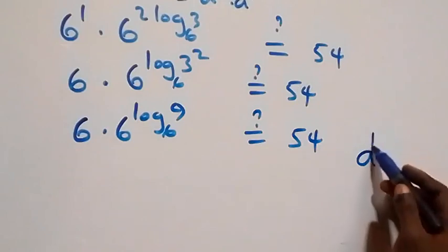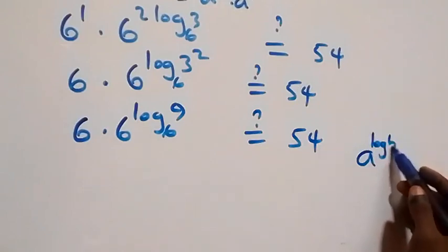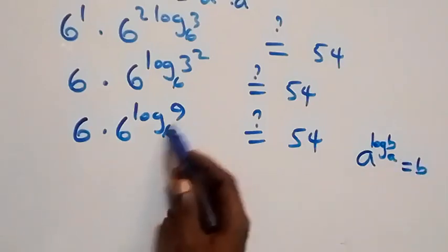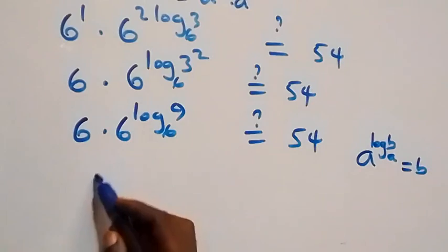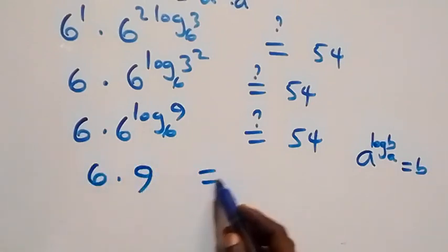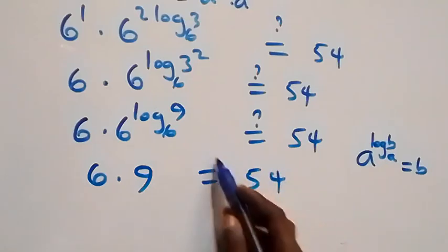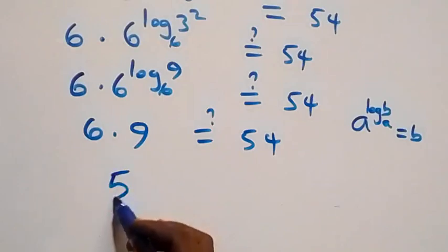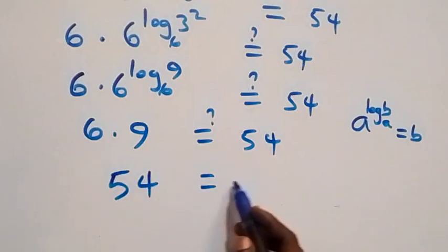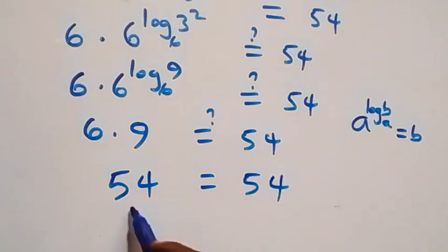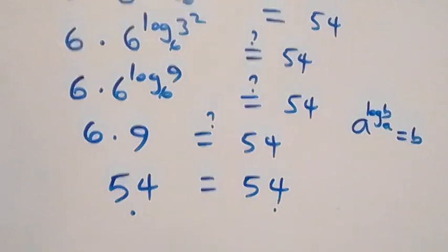This follows from when we have a raised to power log b to base a, which equals b. So 6 raised to power log₆9 equals 9. Therefore we have 6 times 9 equals 54, and 54 equals 54 — the left-hand side equals the right-hand side.